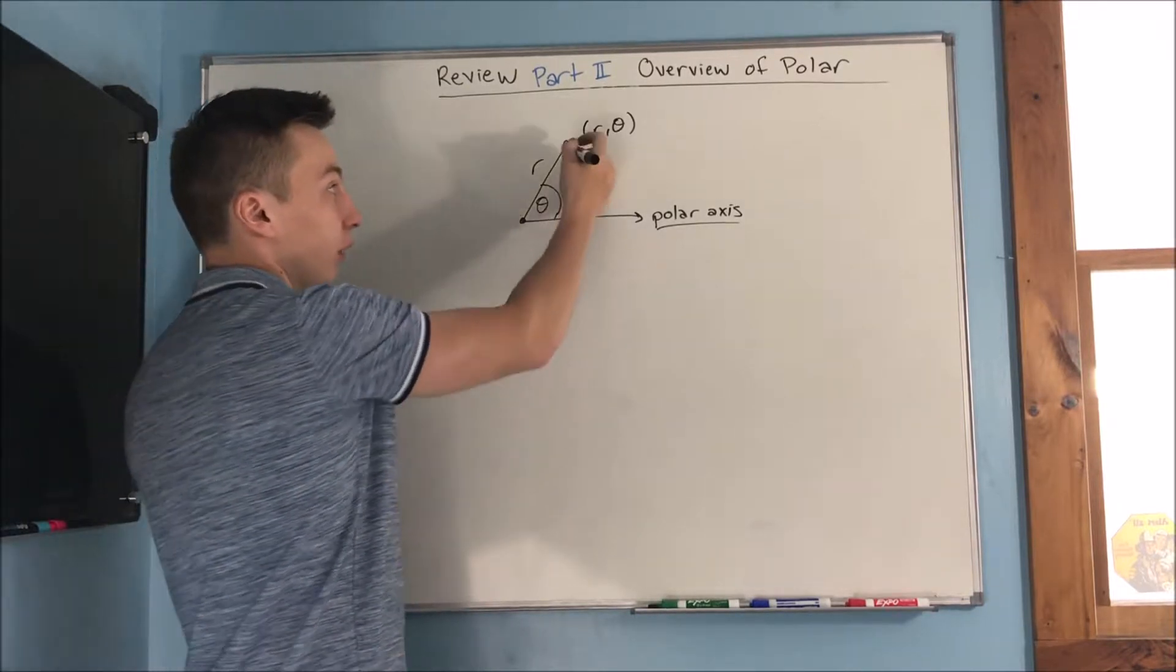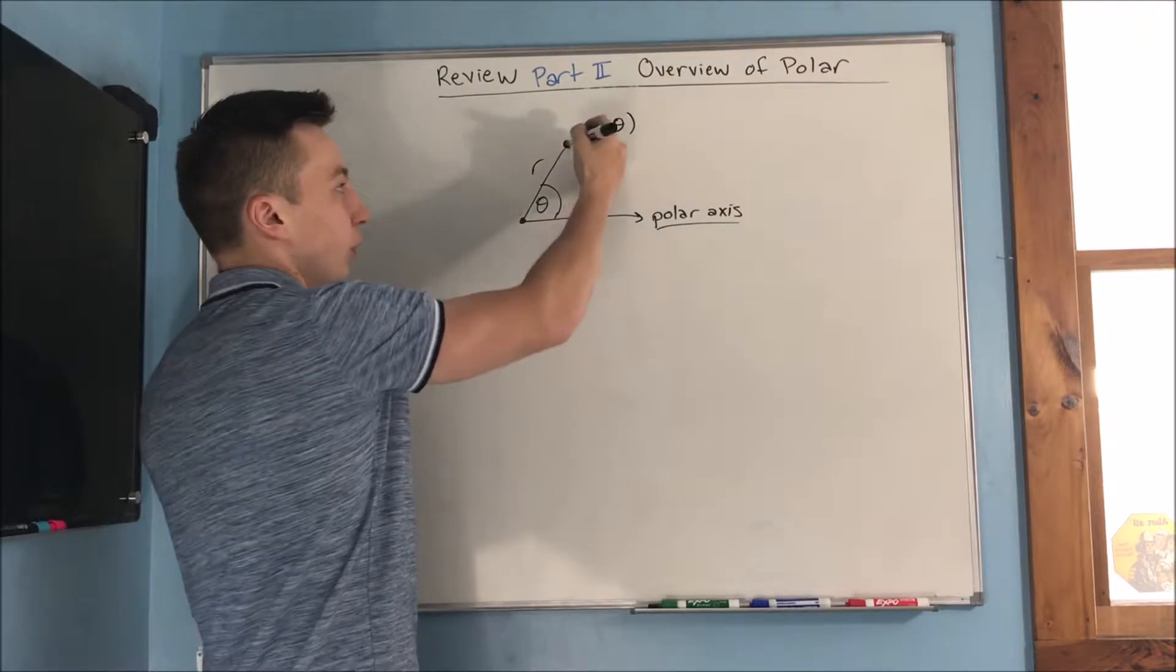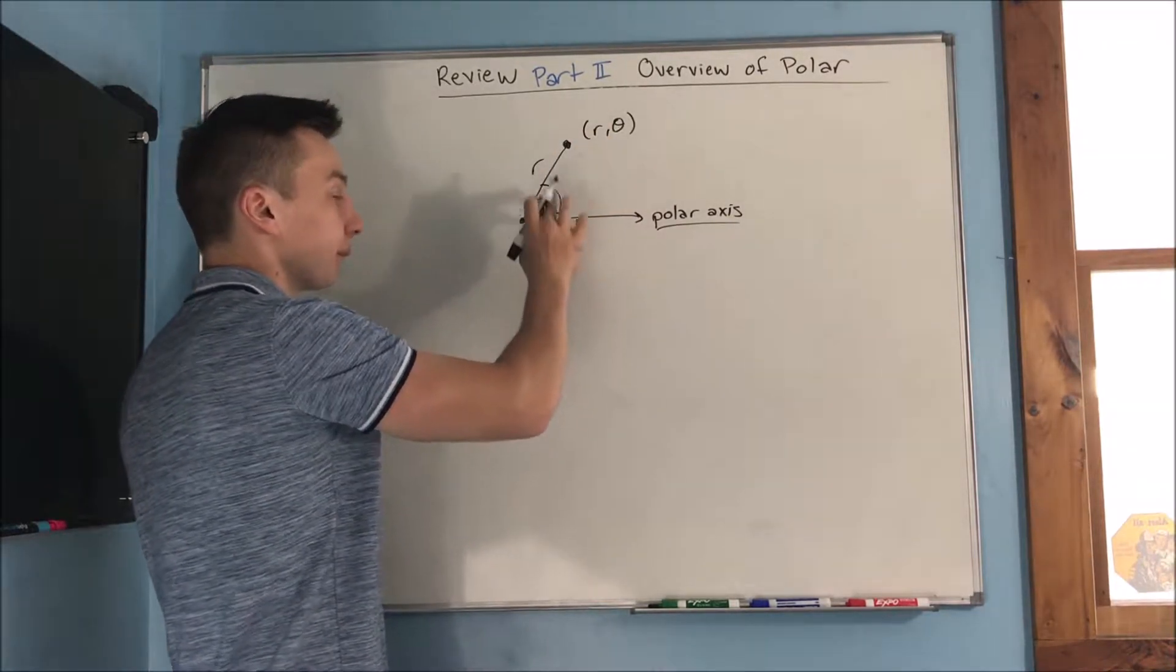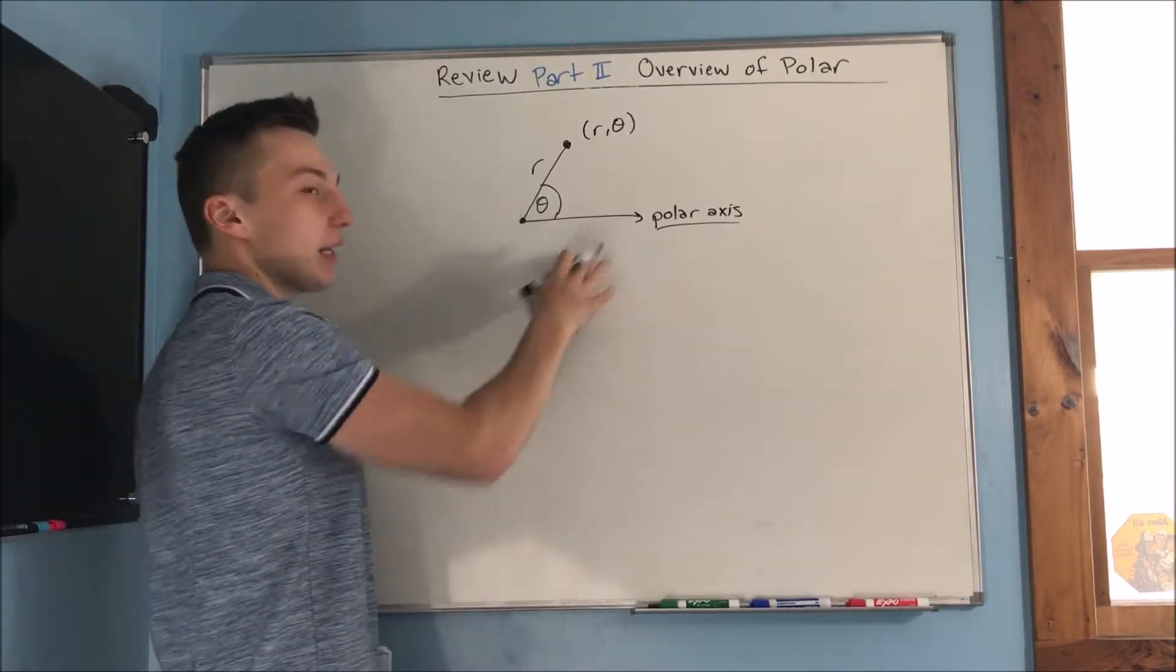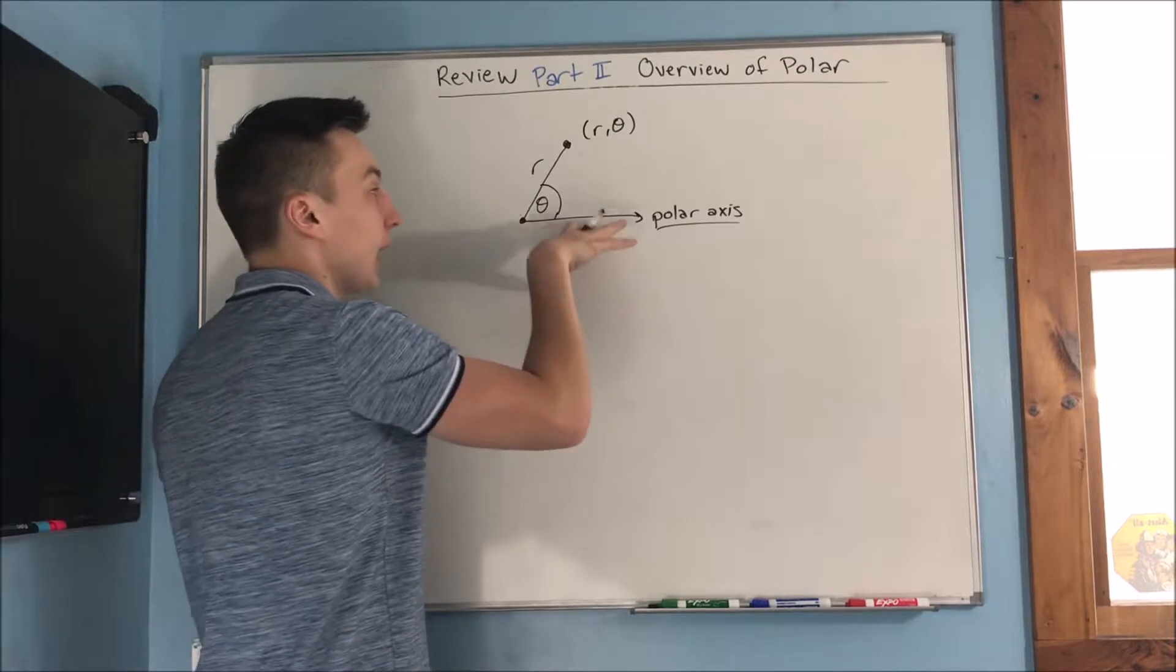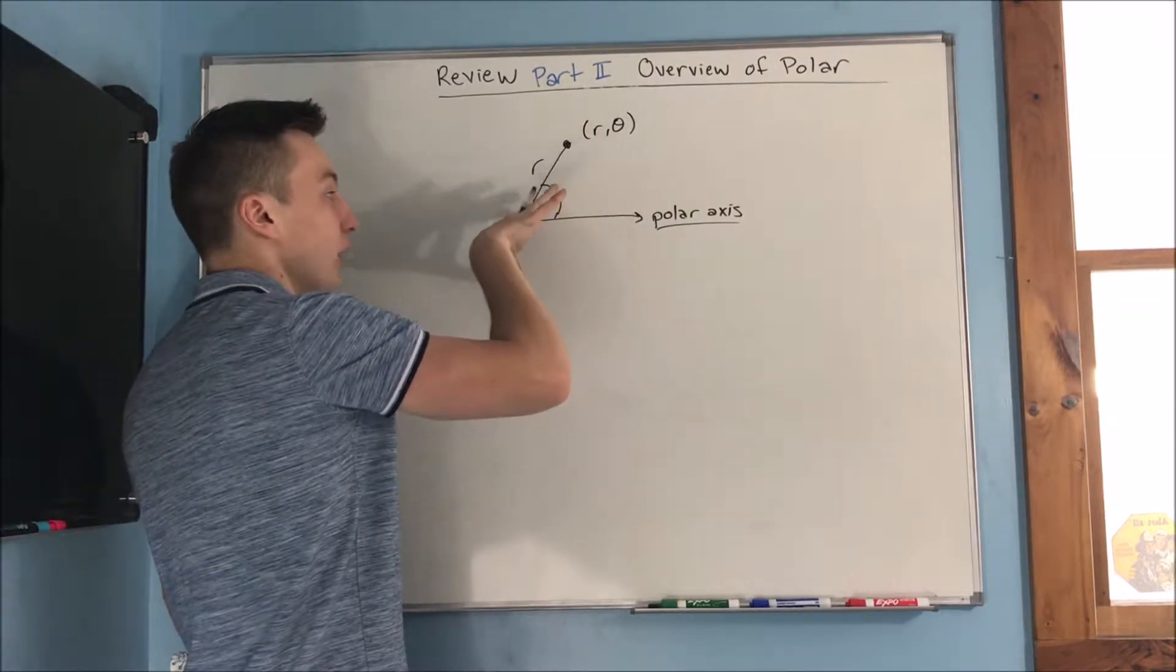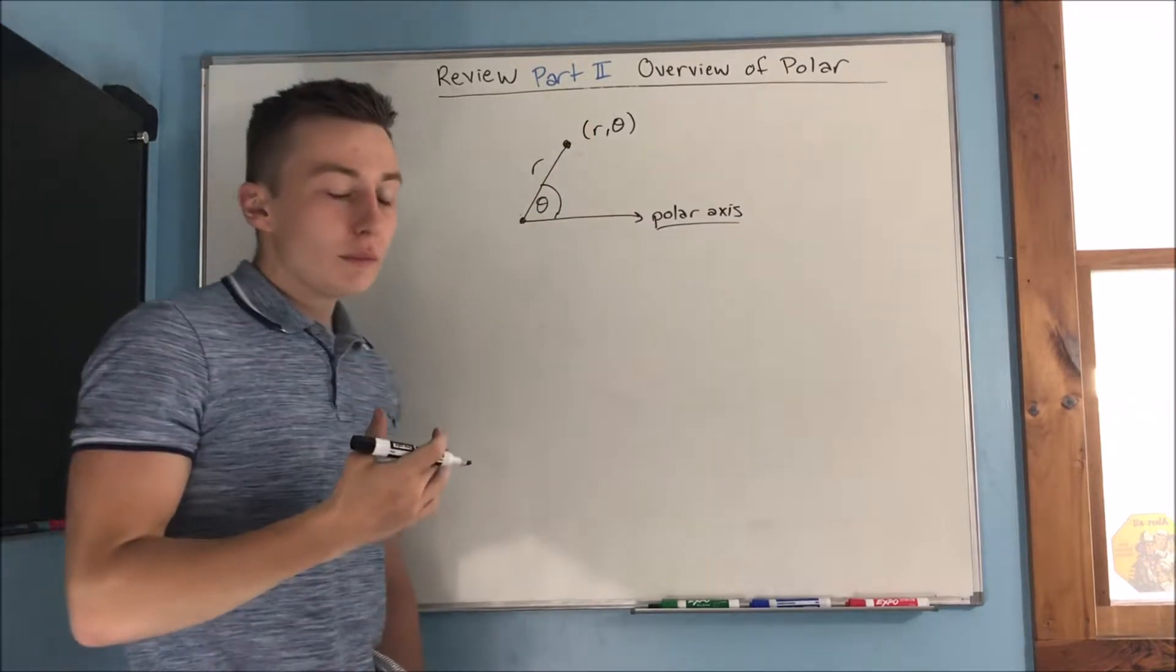And we have R, which is our distance from the pole or origin to our point. And then we have theta, which is the angle between the polar axis, which is the positive x-axis. You can kind of think of it like that. It's the angle between the polar axis and the line that you create by connecting the origin and the point.